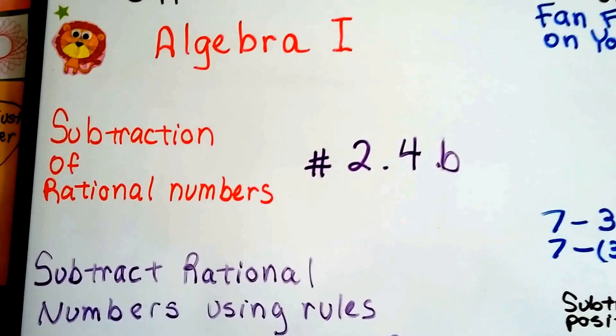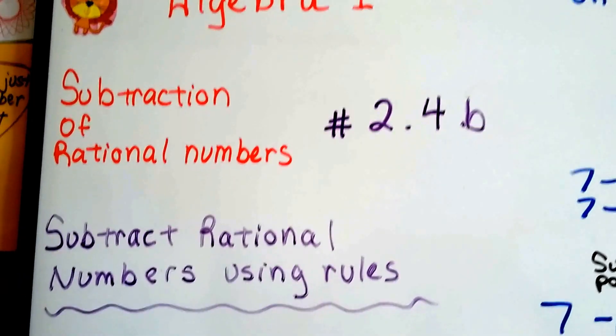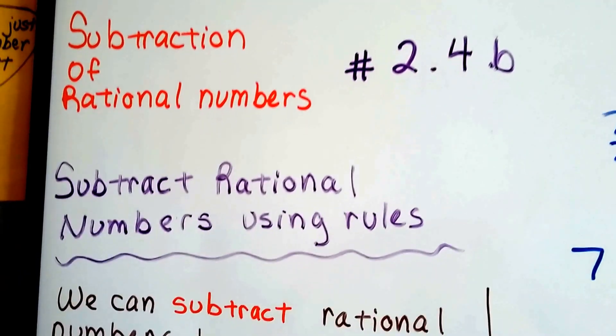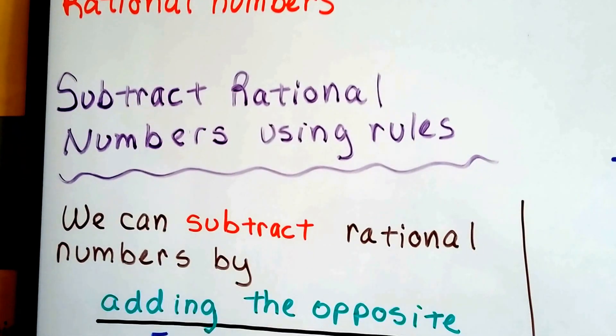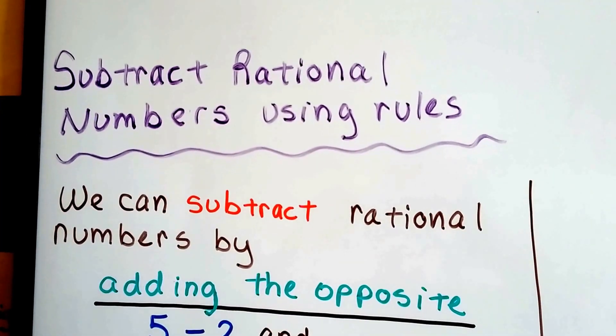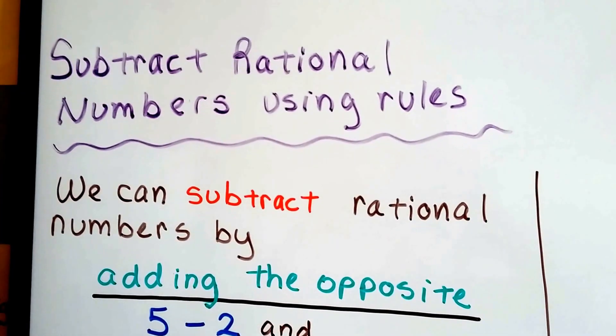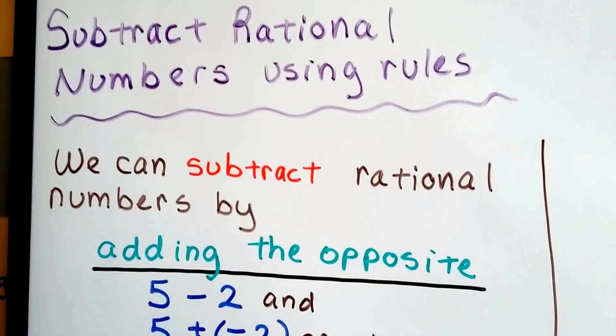Algebra 1, number 2.4b. We're talking about subtracting rational numbers. Now we're going to subtract numbers without a number line, just using the rules.